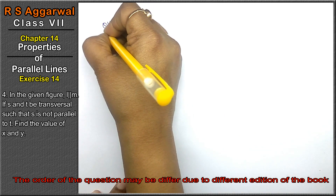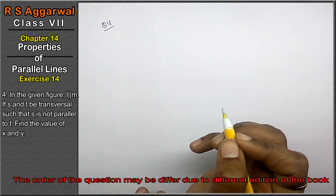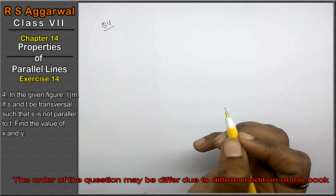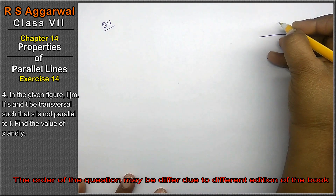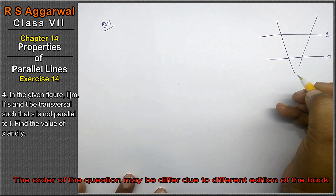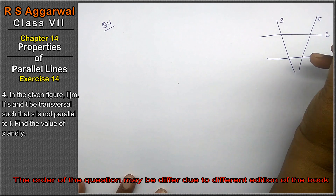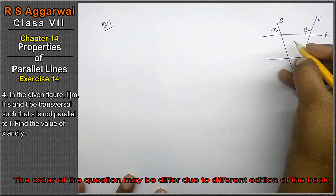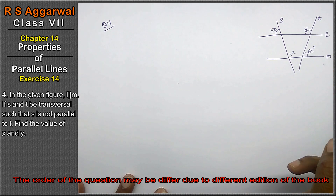Let's do question number 4 of exercise 14, properties of parallel lines. Question 4: in the given figure, l is parallel to m, and s and t are transversals such that s is not parallel to t. Find the value of x and y. The figure shows lines l and m with the two transversals s and t, and angles marked as 50, y, x, and 65 degrees.